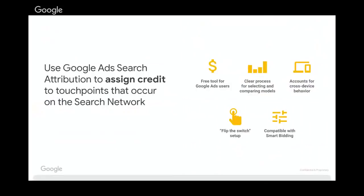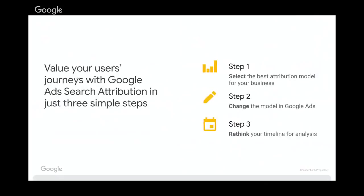Google Ads search attribution will help you assign credit across touch points that have occurred on the search network. There are three main steps: first, selecting the best attribution model for your business; second, changing that attribution model in Google Ads; and third, rethinking your analysis based on this new data.